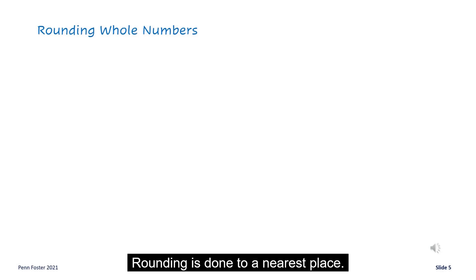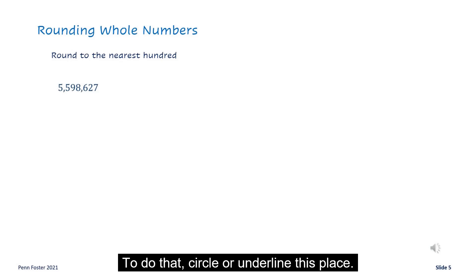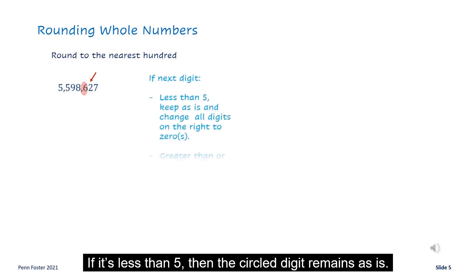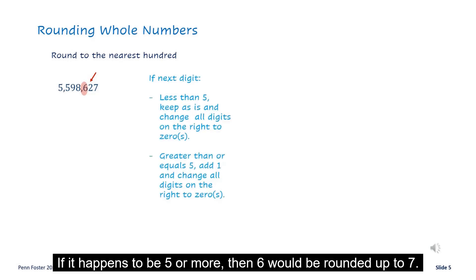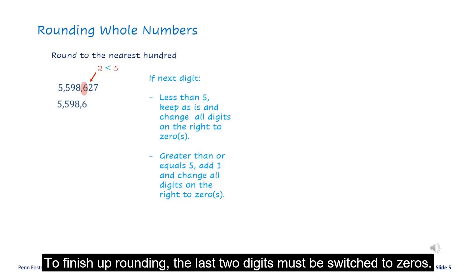Rounding is done to a nearest place. In this example, you're asked to round a number to the nearest hundred. Circle or underline that place — here, 6 holds the hundreds place. Look at the digit right next to 6. If it's less than 5, the circled digit remains as is. If it's 5 or more, then 6 would be rounded up to 7. In this case, 2 is less than 5, so 6 remains unchanged. To finish rounding, the last two digits must be switched to zeros.